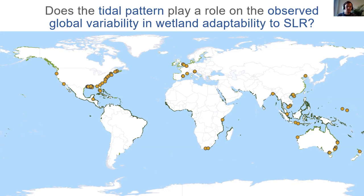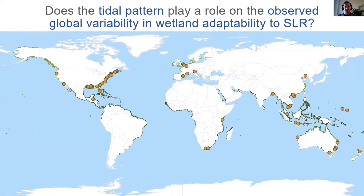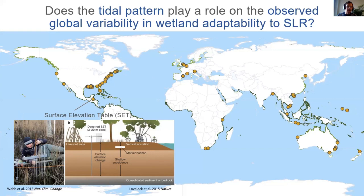Our study aimed to explore and potentially unveil the role of tidal pattern in driving global variability in wetland adaptability to sea level rise. We used two approaches. First, a meta-analysis: from the literature we compiled data on observed rates of wetland elevation change for nearly 400 sites around the globe, comprising both tidal marsh and mangrove. Wetland elevation change was obtained using the surface elevation table, a well-established standard method in the wetland community. We also retrieved values of the global-scale drivers I mentioned: local rate of relative sea level rise from tide gauge records, suspended sediment concentration from satellite imagery, local tidal range, and our newly investigated factor — the tidal pattern — quantified using the form factor.